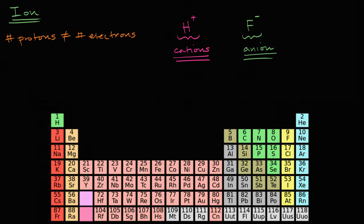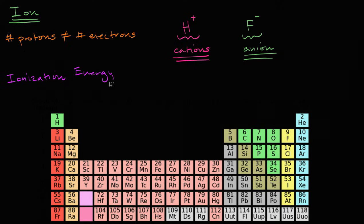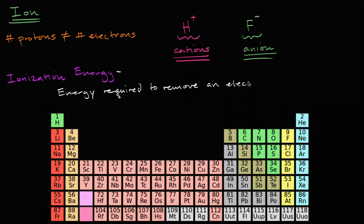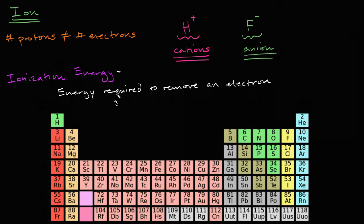To think about that, we'll introduce an idea called ionization energy. Ionization energy is defined as the energy required to remove an electron. It could have even been called cationization energy, because really it's the energy required to remove an electron and make the overall atom more positive.